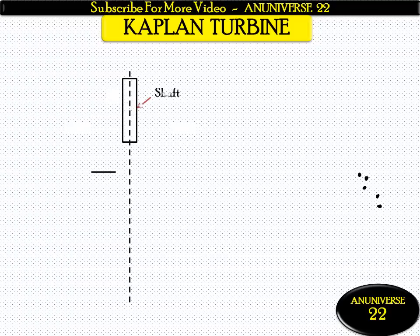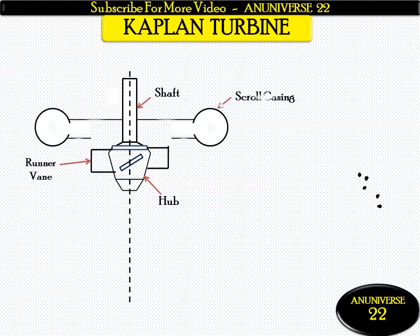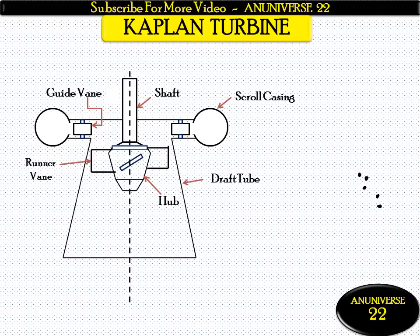This is the shaft to which the hub of the turbine is attached. This is the hub. These are the vanes on the runner, which vary from 3 to 6. This is the scroll casing — these are the main parts of the Kaplan turbine. These are the guide vanes which guide the water from the casing towards the runner vanes. And this is the draft tube, which is used only in reaction turbines such as the Kaplan or Francis turbine, and shows the path for water to discharge towards the tail race.